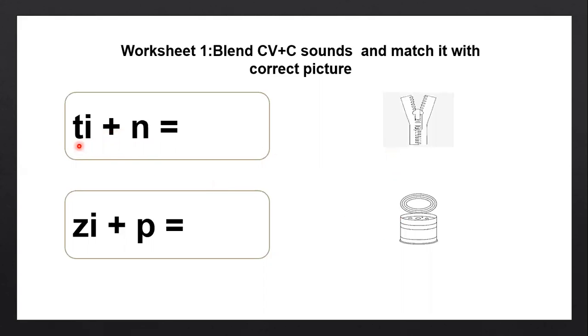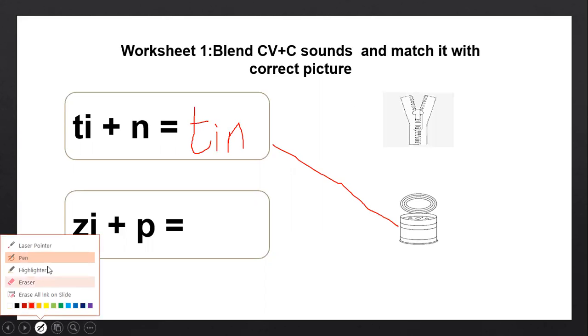So what's the first one? T-I, T-I-N, tin. Okay, so there is a tin picture here, so we'll take a pen and write T-I, T-I-N, tin, and we'll match it with the picture of a tin.